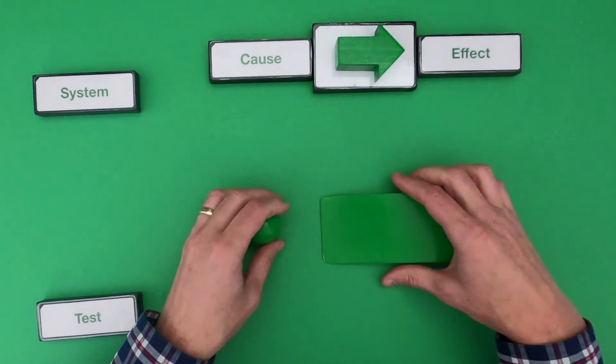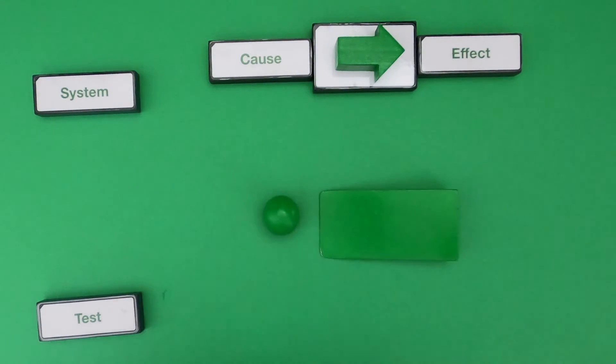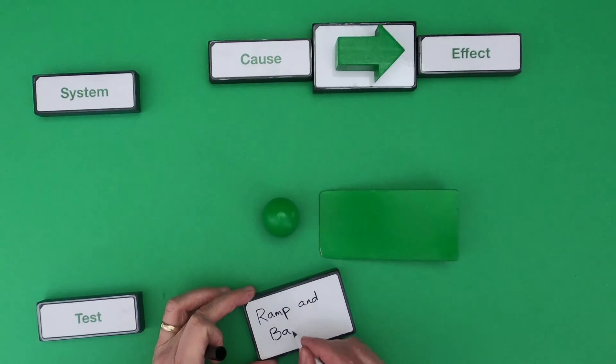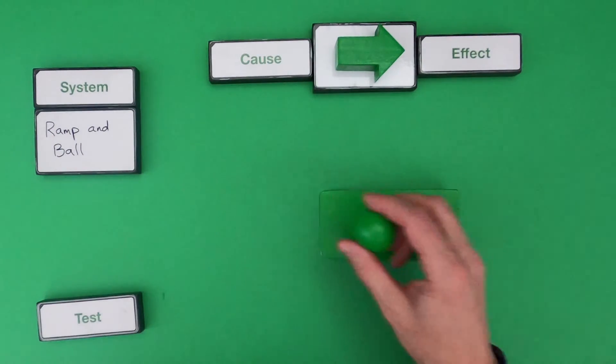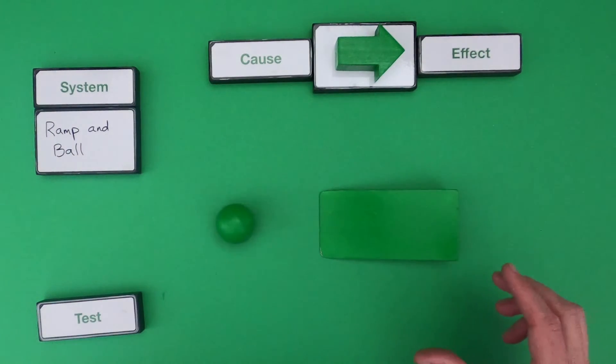So the first thing you should do with any kind of cause and effect is we should develop what's the system, or determine what is the system. So in this case, the system is going to be the ramp and the ball, and let's just investigate this. When I roll the ball down, there's one behavior.